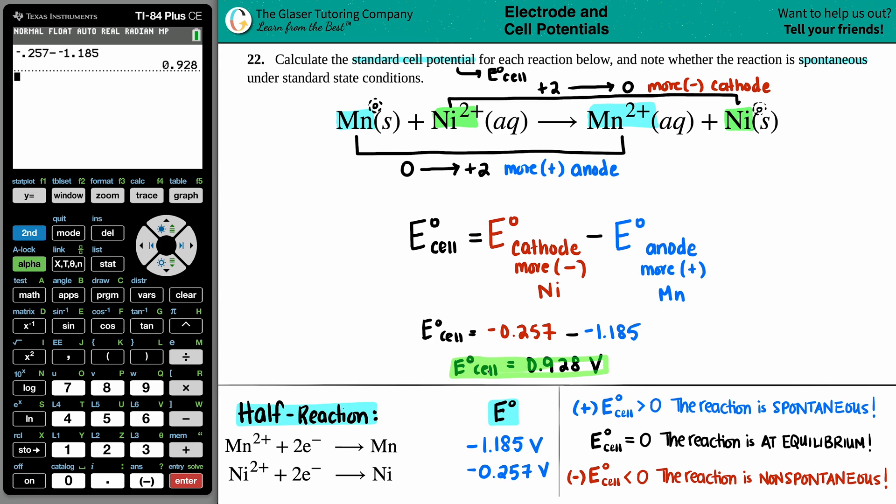Now I just got to find out, is it spontaneous or non-spontaneous? And that all comes from the charge of the E cell. If your E cell value is a positive value greater than zero, that reaction is spontaneous. But if your E cell value is a negative, that reaction is non-spontaneous.